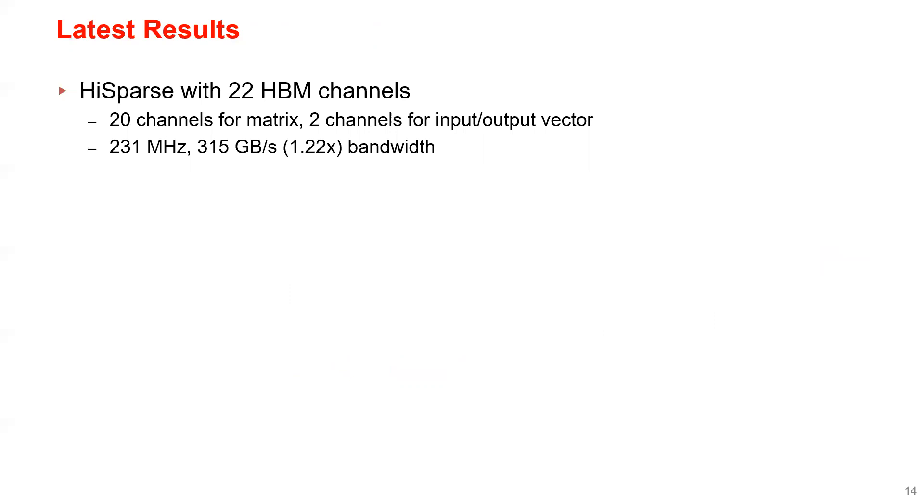Finally, please also let me introduce some latest results. We scaled up HiSparse to 22 HBM channels, which provide 315 gigabytes per second bandwidth. This 22 channel design runs at 231 MHz, pretty much the same as the 18 channel one.